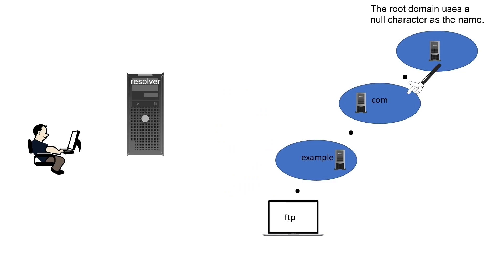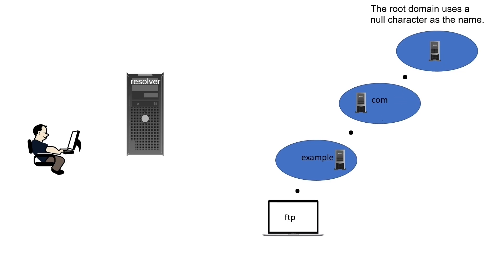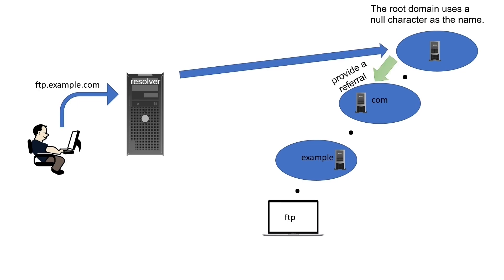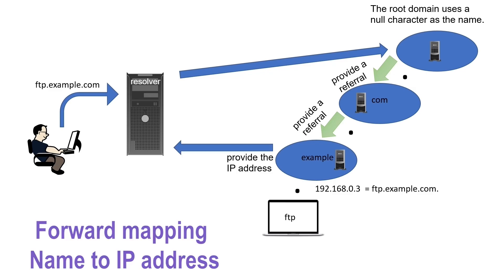Only authoritative name servers can resolve queries. If a name server is not authoritative for a domain, it provides a referral to the next authoritative name server in the sequence. Since all authoritative name servers work in a hierarchy, a resolver system can easily reach the authoritative name server that can resolve its queries. This process is an example of forward mapping.